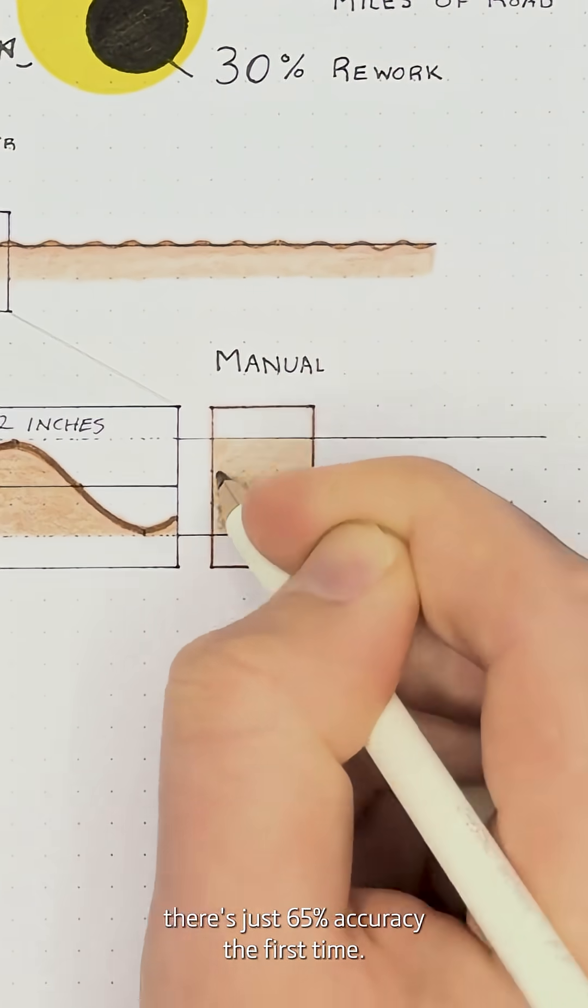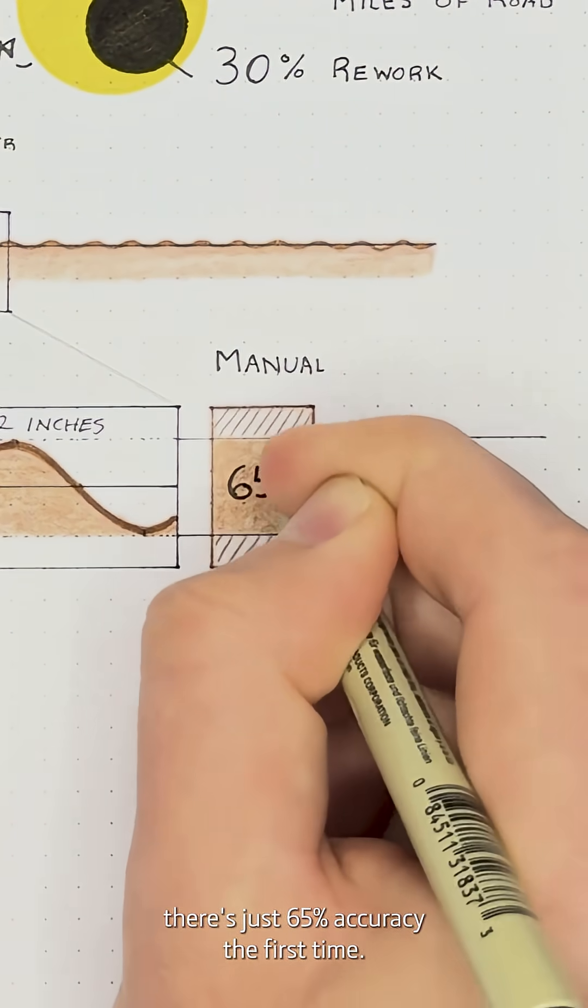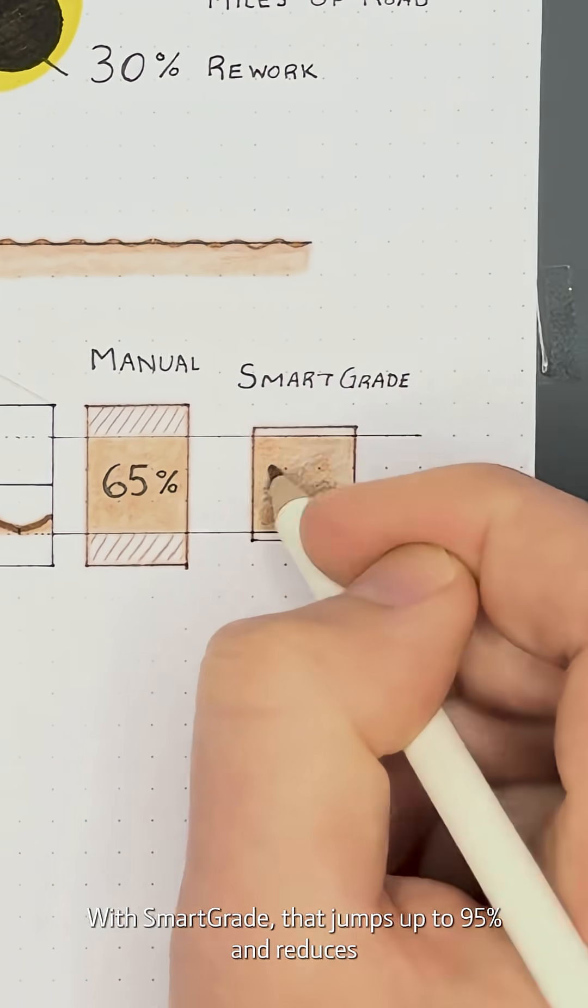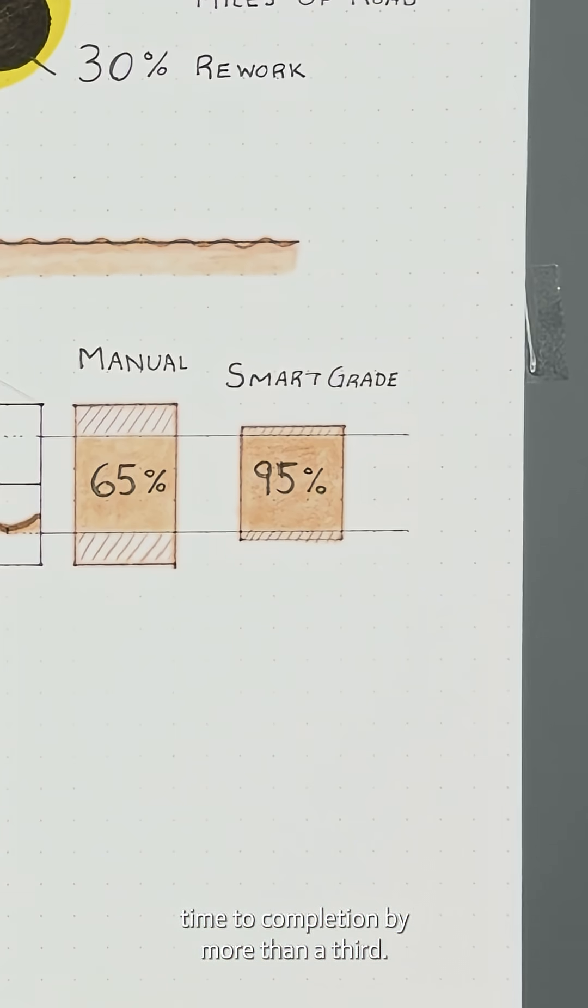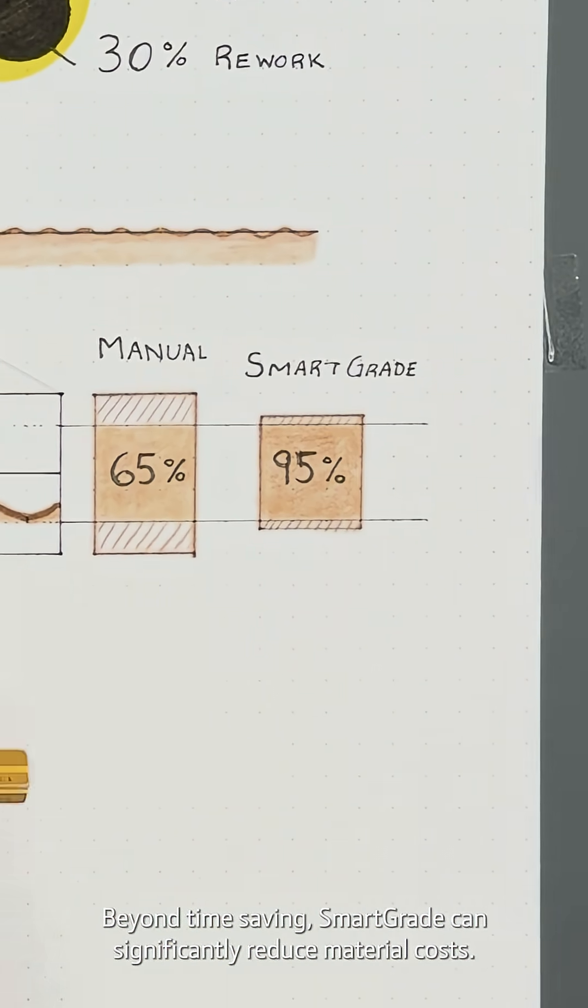With manual grading practices, there's just 65% accuracy the first time. With SmartGrade, that jumps up to 95% and reduces time to completion by more than a third.